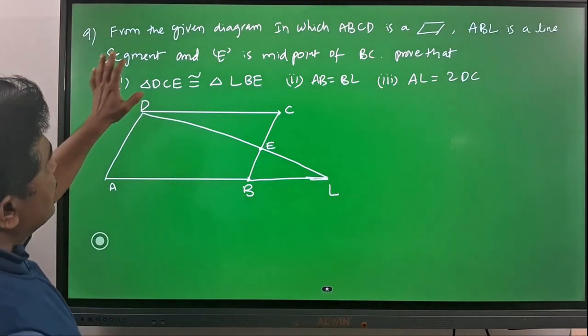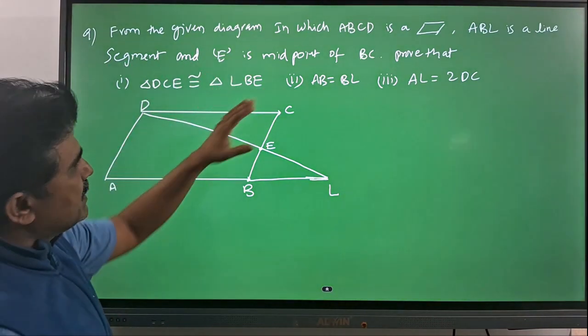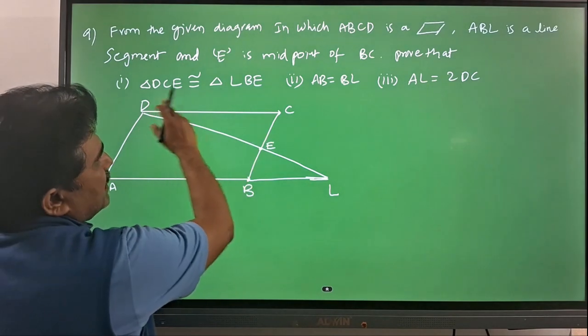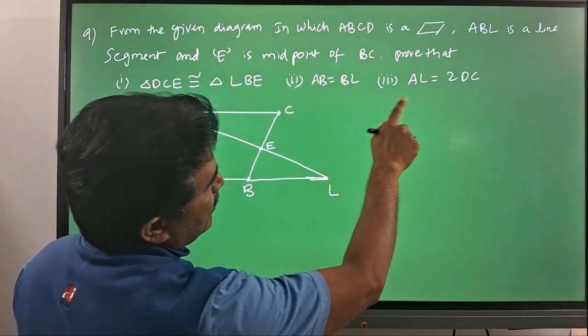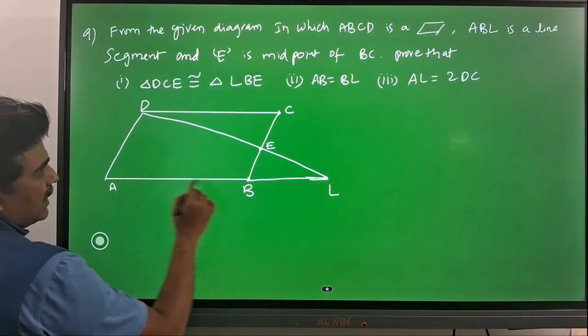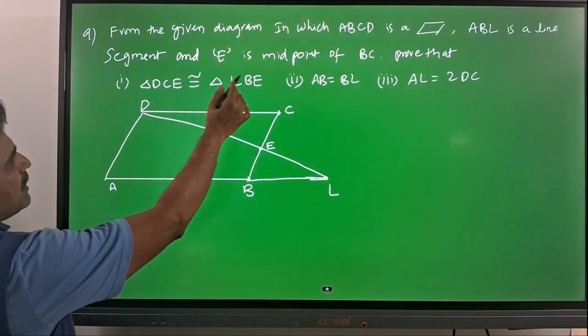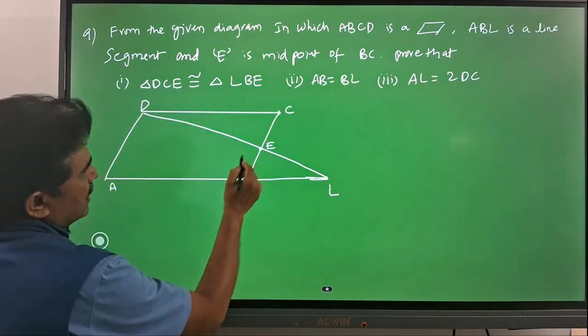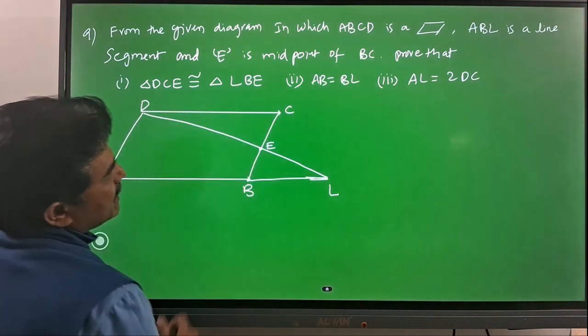Our next question is from the given diagram in which ABCD is a parallelogram, ABL is a line segment, and E is the midpoint of BC.